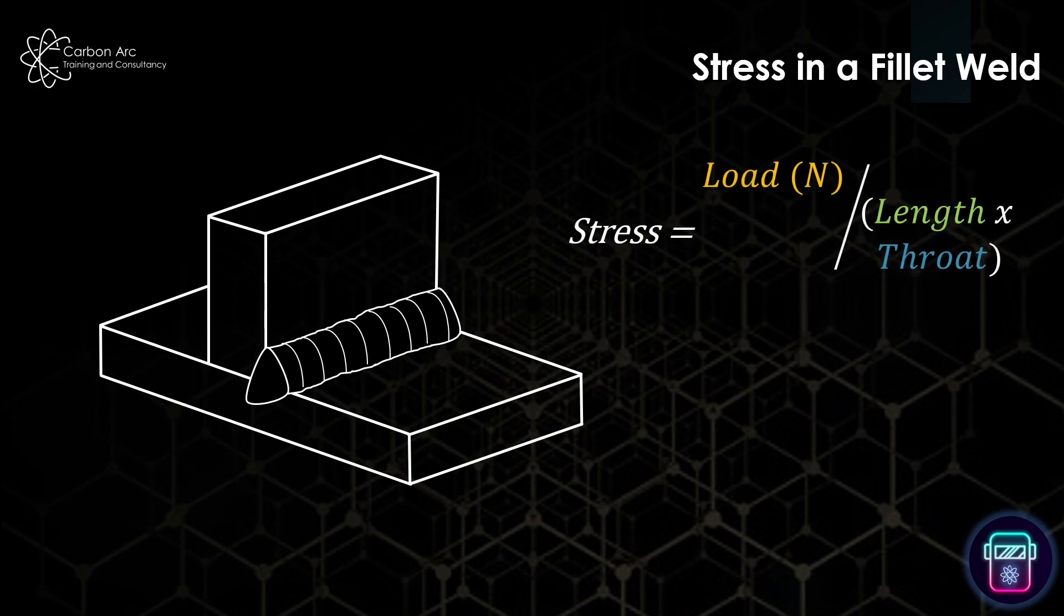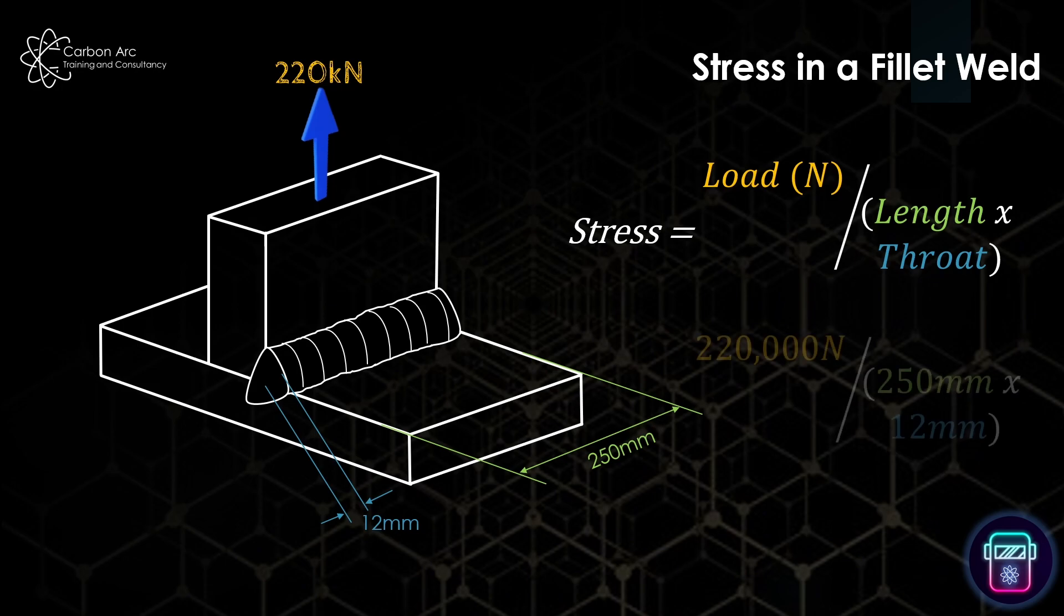Here we have our workings, starting to change the equation to what we can input values from. So if I was to give the following values: 220 kilonewtons, my length is 250 millimeters and my throat thickness is 12 millimeters, we can input that into our equation to be 220,000 newtons divided by my cross-sectional area, which is 250 times 12.